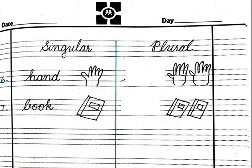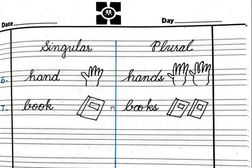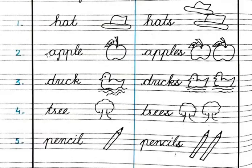Next page. Hand — H-A-N-D — and hands, H-A-N-D-S. Next one: book — books, B-O-O-K-S. So like this, you have to write the singular and plurals in your notebook.